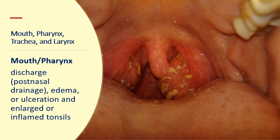For the mouth and pharynx, you can watch out for discharges, especially post-nasal discharge; patients may complain of something foreign in their oropharynx. You also check for edema, ulceration, and enlarged or inflamed tonsils. An inflamed tonsil can be graded from 1+ to 4+, where 4+ means kissing tonsils — the tonsils are so close that the patient is unable to swallow. The image shown would be graded 2+ for tonsils.